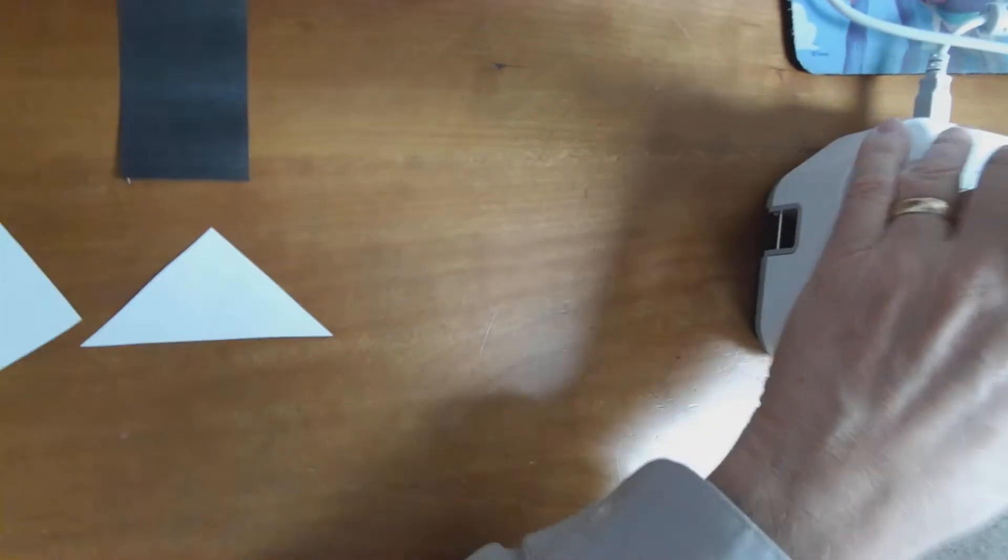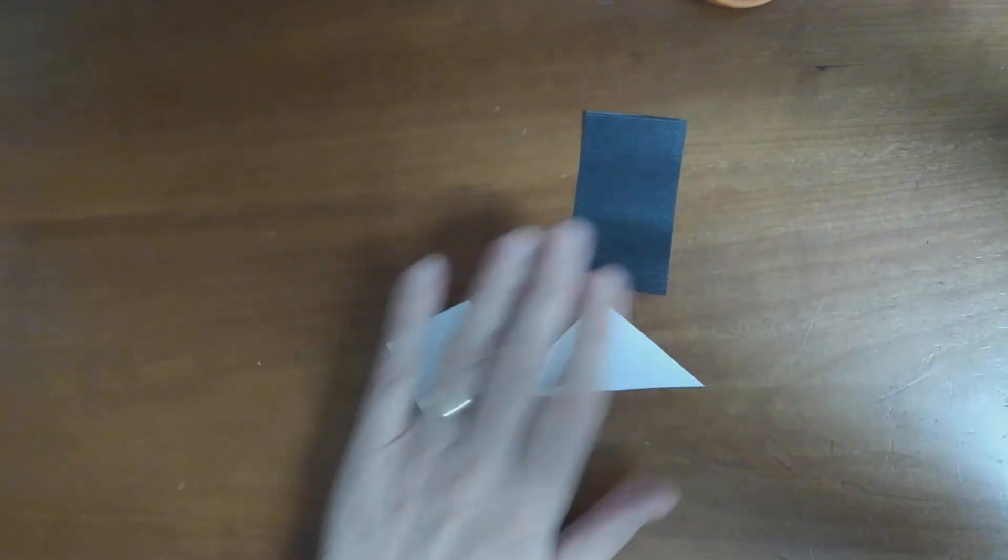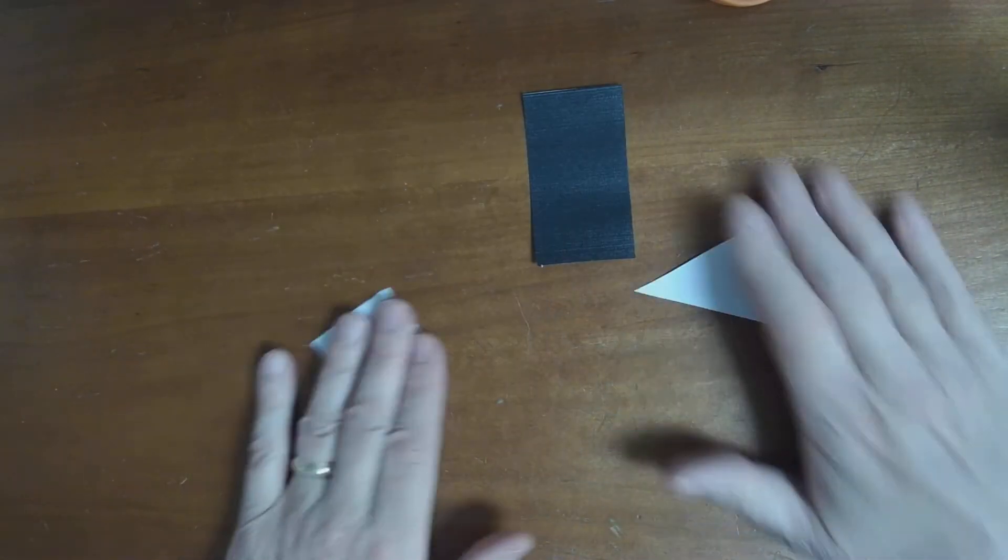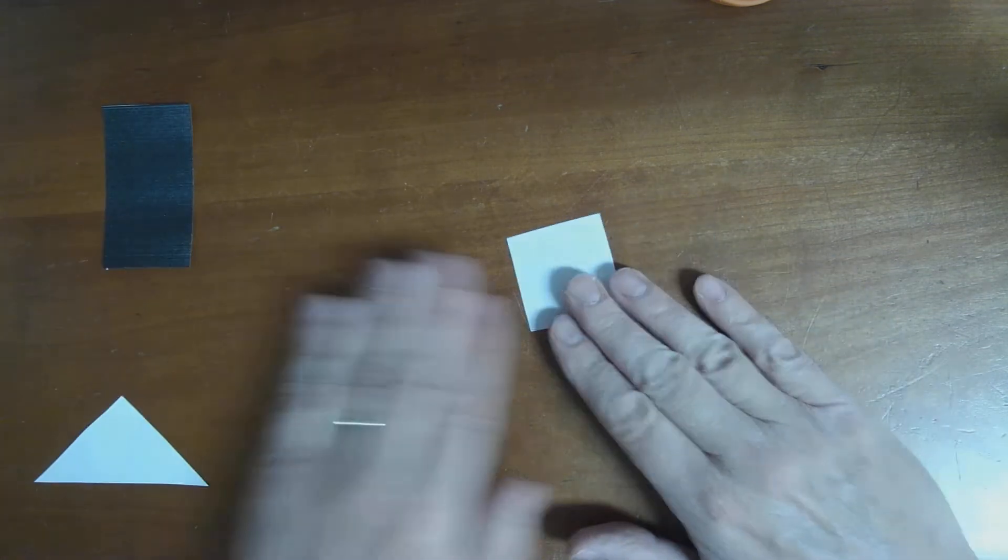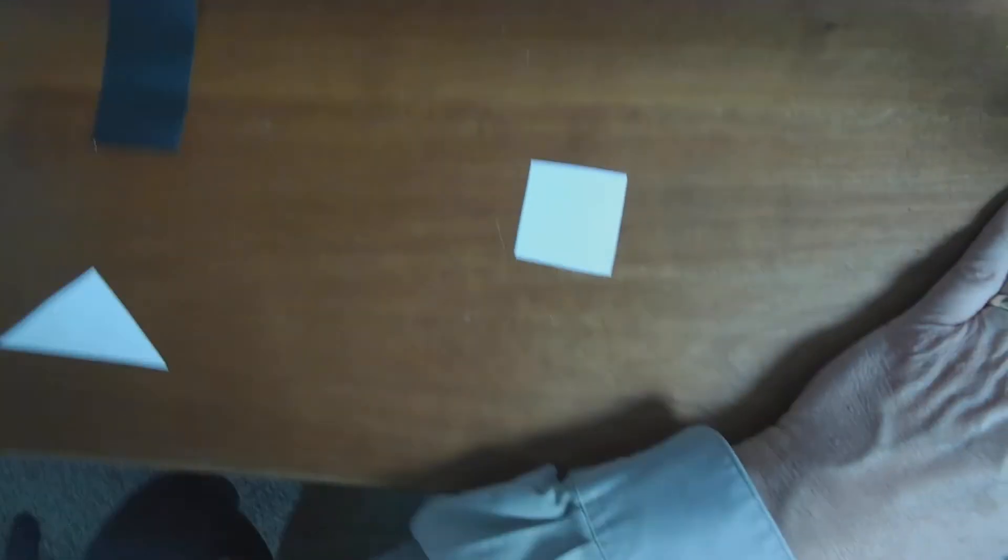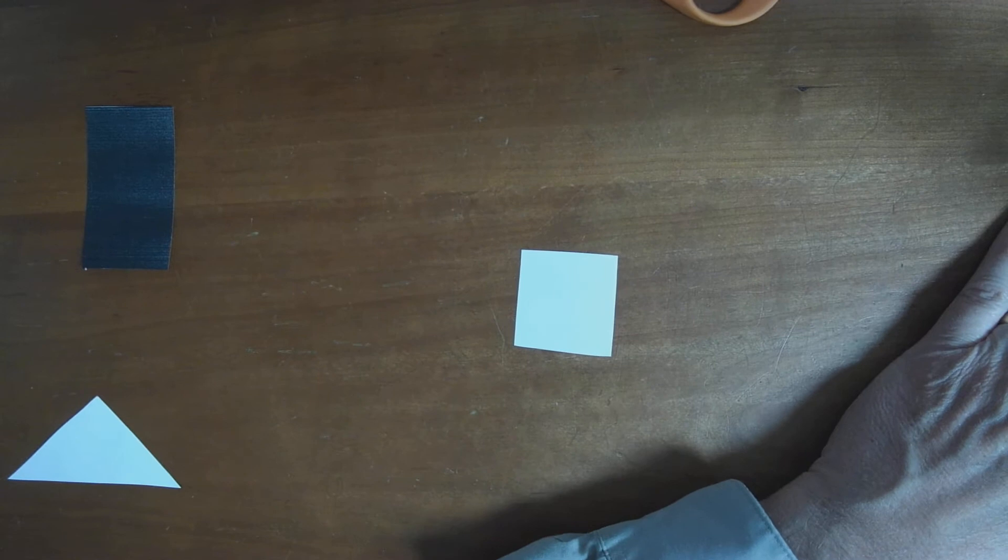Now, before we do that, I want to talk about some shapes here. And the first shape I want to talk about is this guy right here, the square, okay? Here, we've got a little square, right?